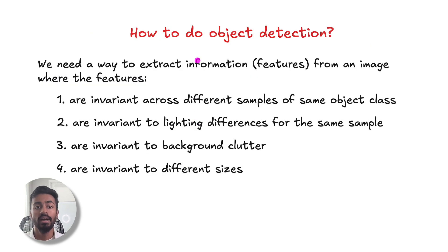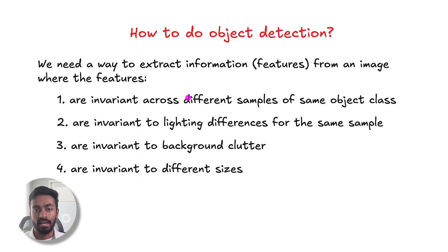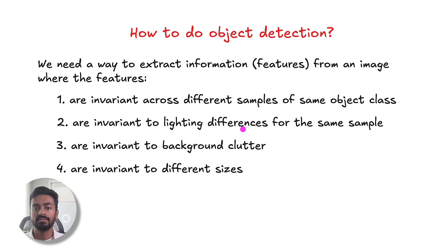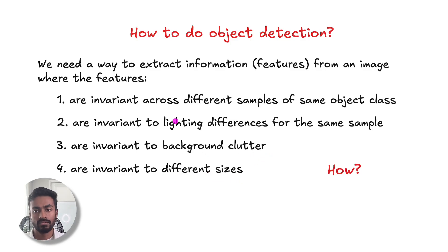So how do you do object detection? We need a way to extract some information from this image such that the features or the information extracted are invariant across different samples of the same object class, invariant to differences for the same sample, invariant to background clutter and also to different sizes. So how do you do object detection?